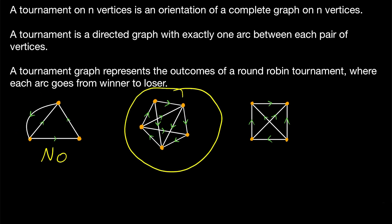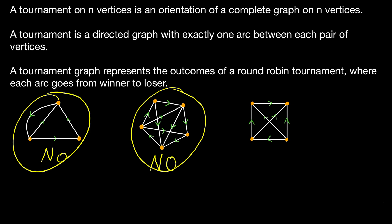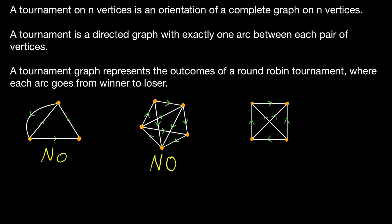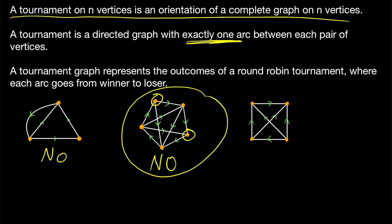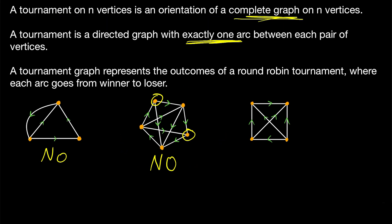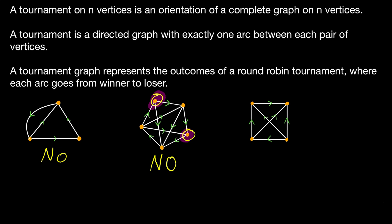How about the second graph — is this a tournament? Again, the answer is no. This doesn't have the problem that the first graph has; there's no pair of vertices joined by two arcs. But there is a problem: these two vertices don't have any arc between them. Remember, there has to be exactly one arc between each pair of vertices — not two, not zero. This is not an orientation of a complete graph, because a complete graph would have an edge joining each pair. Thinking of it as a round-robin tournament, this would mean these two teams never played each other, which is not a round-robin tournament.